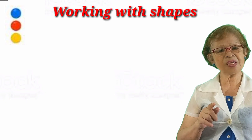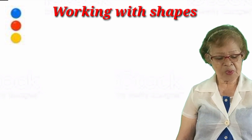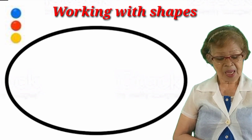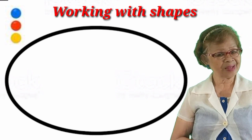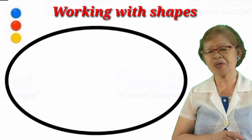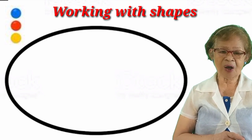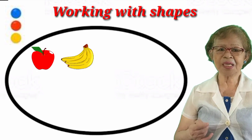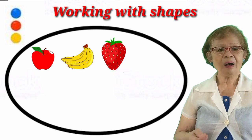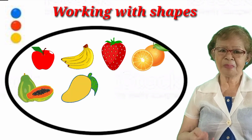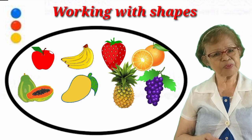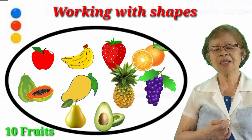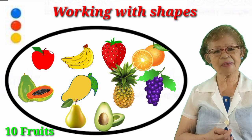Now we go to another example for working with shapes. We are going to draw an oval and make it into a tray, then fill it with ten fruits. Now we start putting all the fruits inside the tray: apple, banana, strawberry, orange, papaya, mango, pineapple, grapes, pear, and avocado. Now our tray, which is an oval, is full of different kinds of fruits.